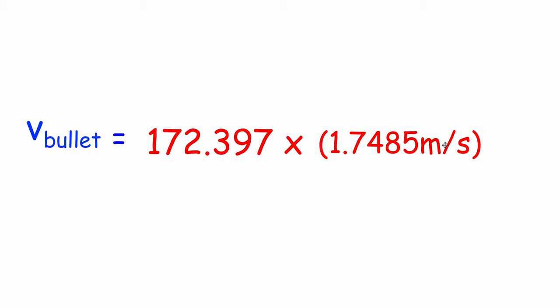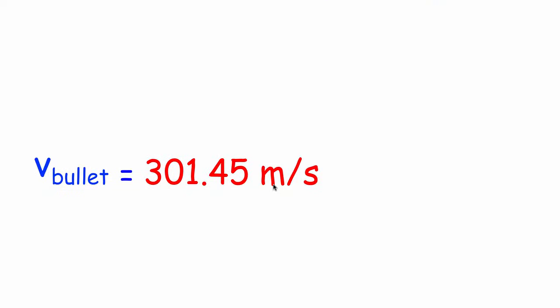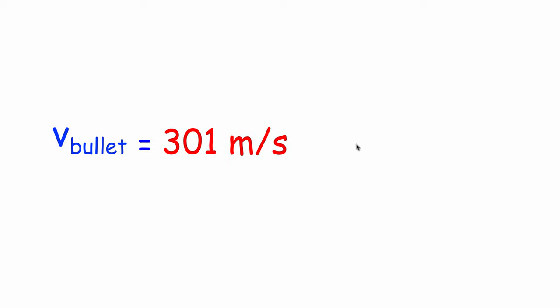Multiplying 172.397 by 1.7485 gives 301.45 meters per second. Since we only had three significant figures in our original question, we can only go to three significant figures, which means the muzzle velocity of the bullet would be 301 meters per second.